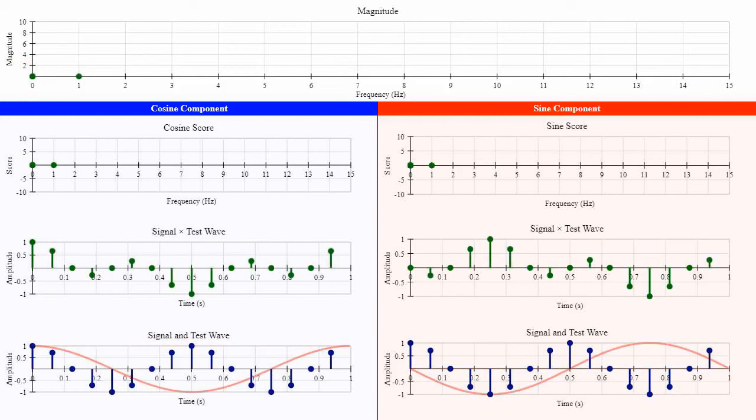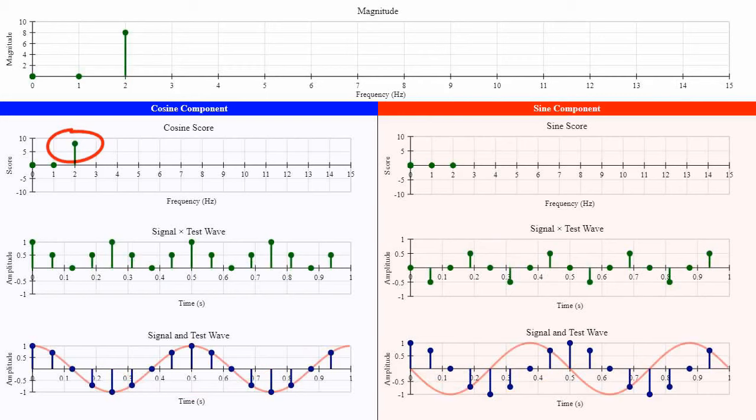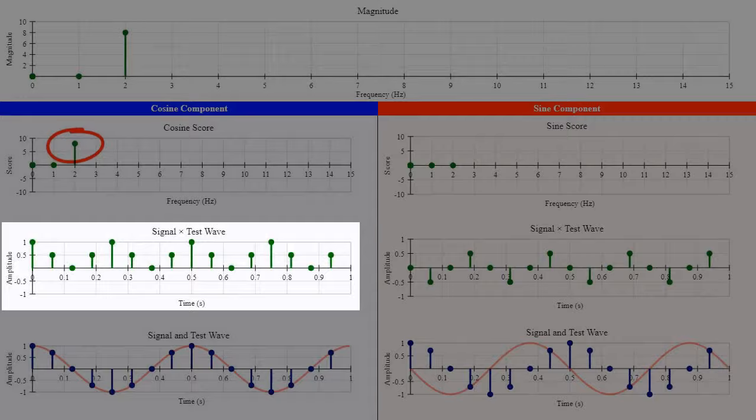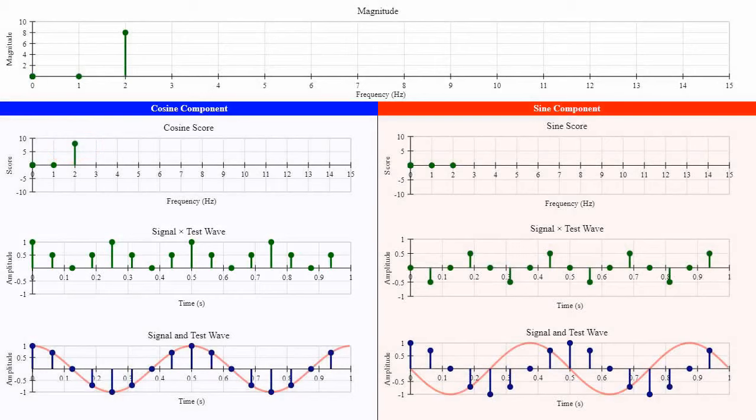However, when we test a 2Hz frequency, the cosine component is not 0. You can see how all the multiplied points are positive, producing a positive score. This means that 2Hz is a frequency present in our signal. The sine component is still 0 though. This tells us that the cosine component is contributing all the energy to the signal at this frequency.